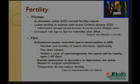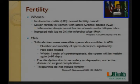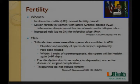Sulfasalazine is probably the major culprit in male infertility. It causes reversible sperm abnormalities in about two-thirds of men — both quantitative and qualitative effects, decreasing the number and motility of sperm. Importantly, this is not dose-related whether you're taking two, three, or four grams. Within one cycle of spermatogenesis, about two months, the sperm will be healthy again. So if a male wants to have a child, hold the sulfasalazine for about two to three months and fertility usually returns to normal.